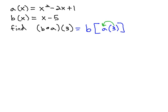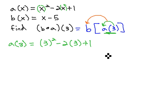So let's find out what the a(3) is going to be, that inside part. Replacing the x's with 3, we get 3² - 2 times 3 + 1. 3² is 9, minus 2 times 3 plus 1. 2 times 3 is 6. 9 - 6 + 1 is 4.